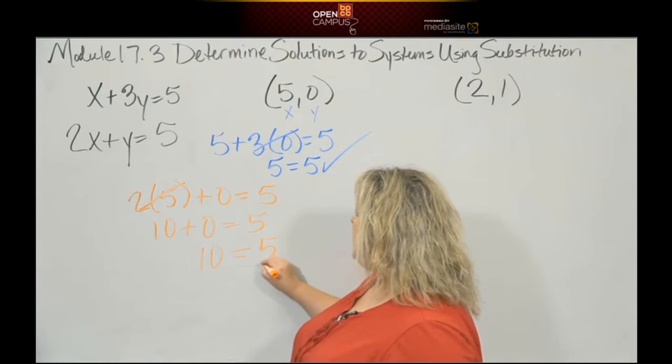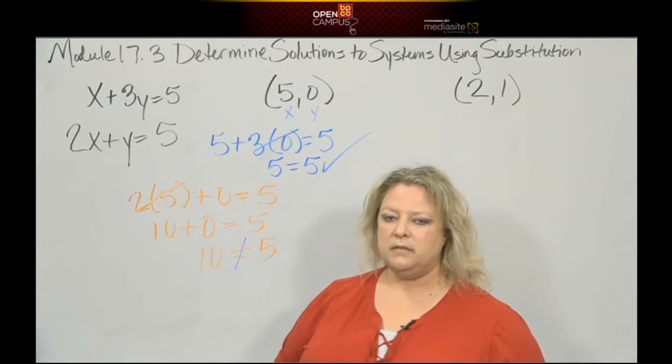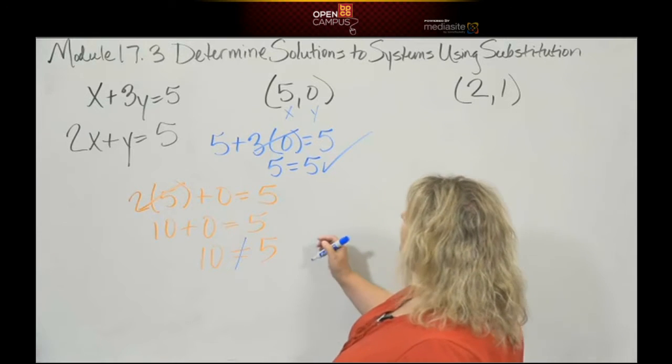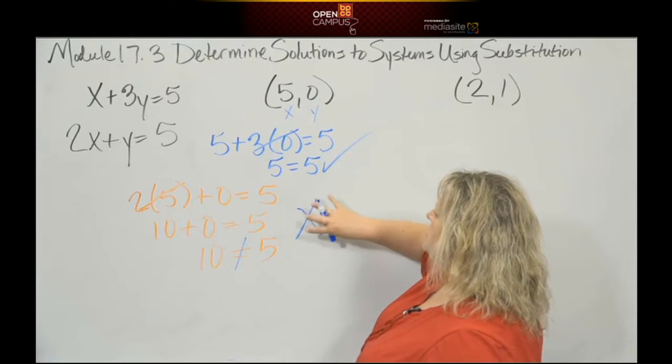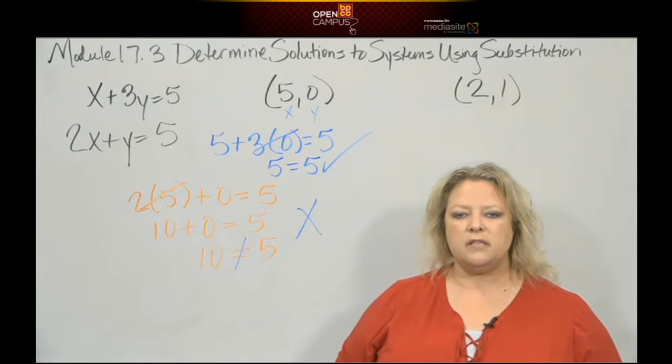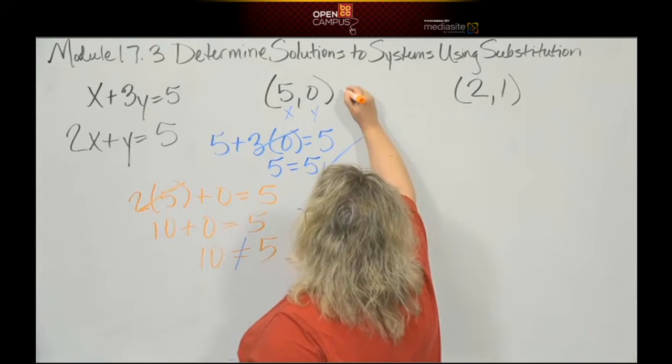Ten does not equal five. That's a big fat no. Because ten does not equal five, even though it worked for one of the equations and not the other, in order for this to be a true solution to the system, it has to work for both. So you would say no, this is not a solution to the system.